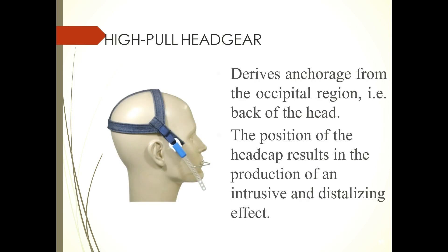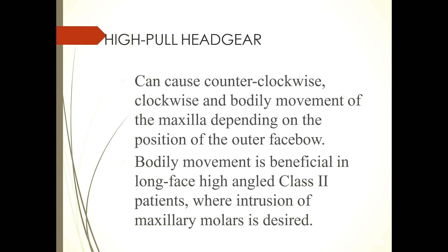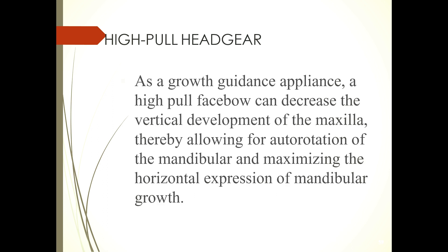High pull headgear: Derives anchorage from the occipital region, that is the back of the head. The position of the headcap results in the production of an intrusive and distalizing effect. It can cause counterclockwise, clockwise, and bodily movement of the maxilla, depending on the position of the outer face bow. Bodily movement is beneficial in long face, high angle class 2 patients where intrusion of maxillary molars is desired. As a growth guidance appliance, a high pull face bow can decrease the vertical development of the maxilla, allowing for autorotation of the mandible and maximizing the horizontal expression of mandibular growth.